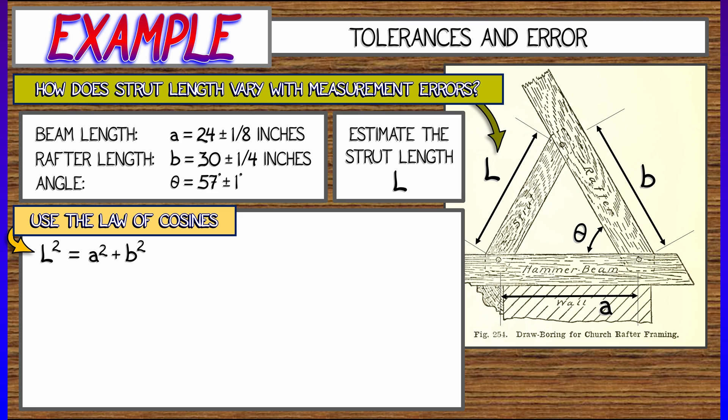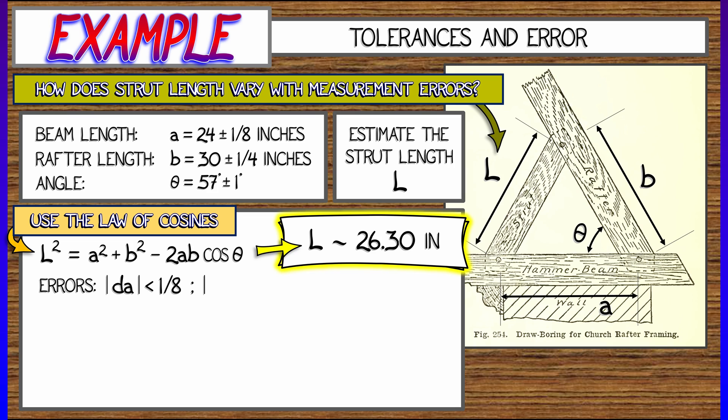So let's use the law of cosines to relate all these terms together. You might have to go look that up. But that's L squared equals A squared plus B squared minus 2AB cosine theta. Now, given that, I'm going to estimate L. And here, I really am going to use a calculator. And I'm going to say, oh, plug that in. L is approximately 26.3 inches. That's our length L. But the question is, how good is that? I only know A, B, and theta up to certain tolerances.